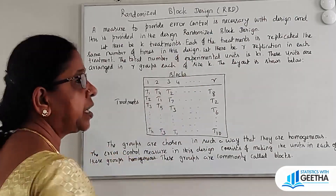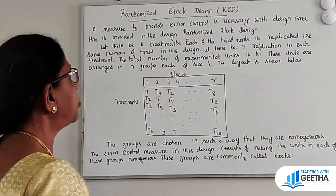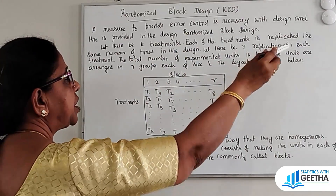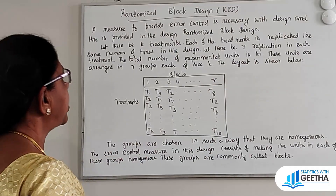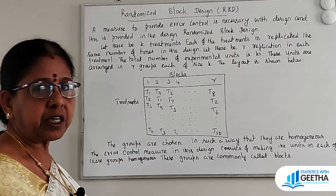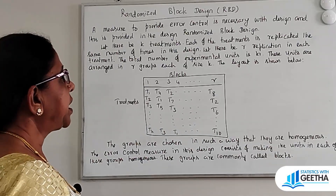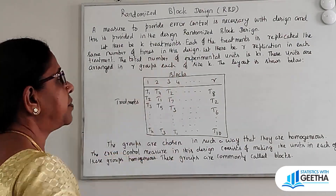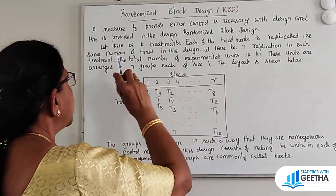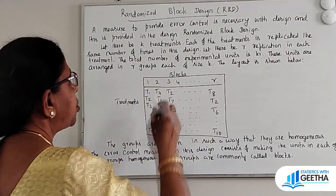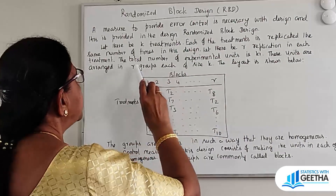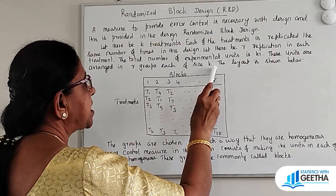RBD has k treatments, and each of the treatments is replicated the same number of times in this design — r times. Let there be r replications in each of the treatments. The total number of experimental units is k times r. These units are arranged in groups, each of size k.